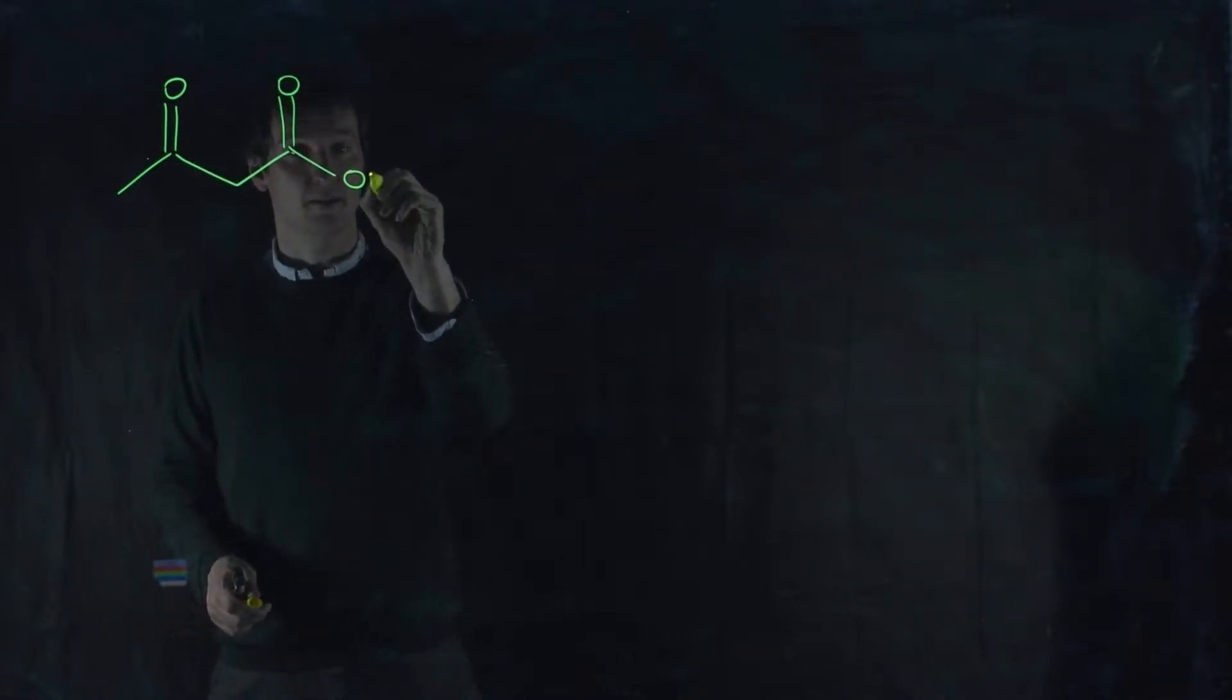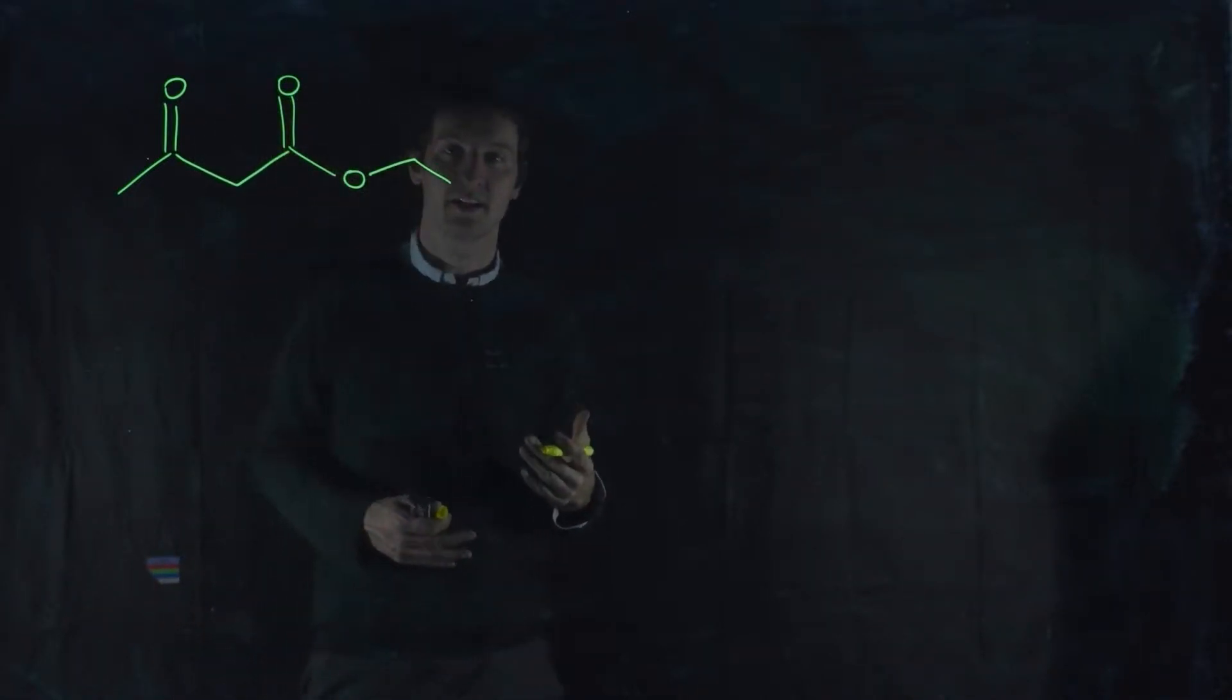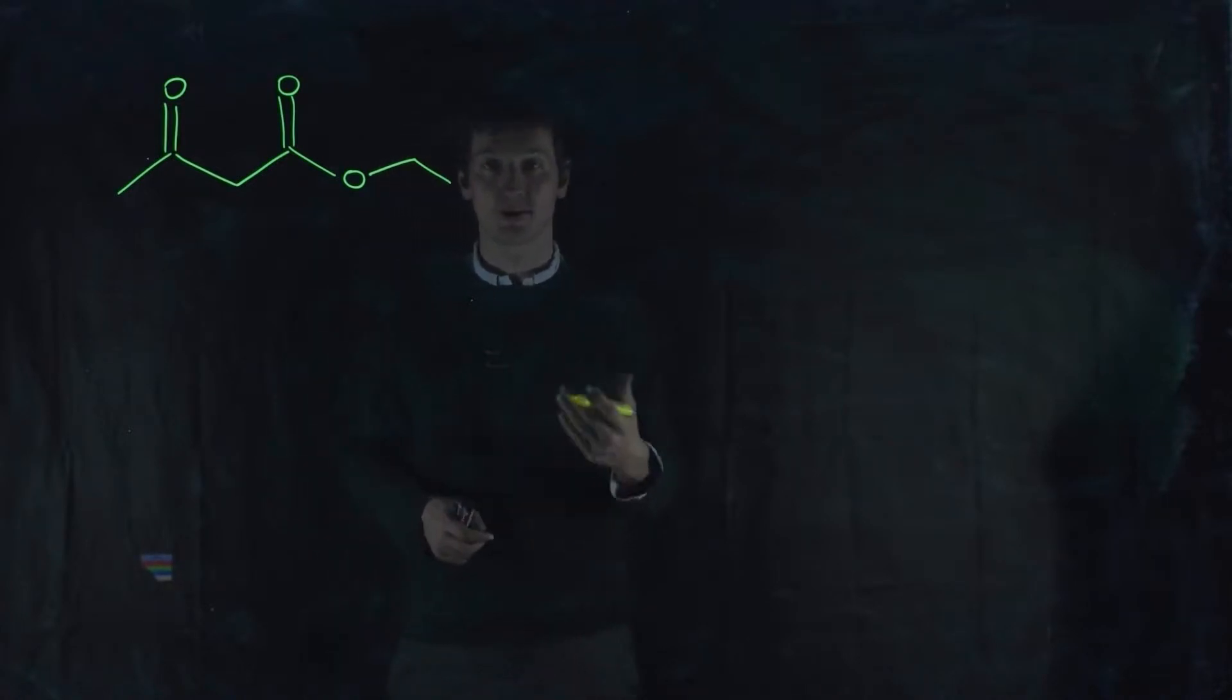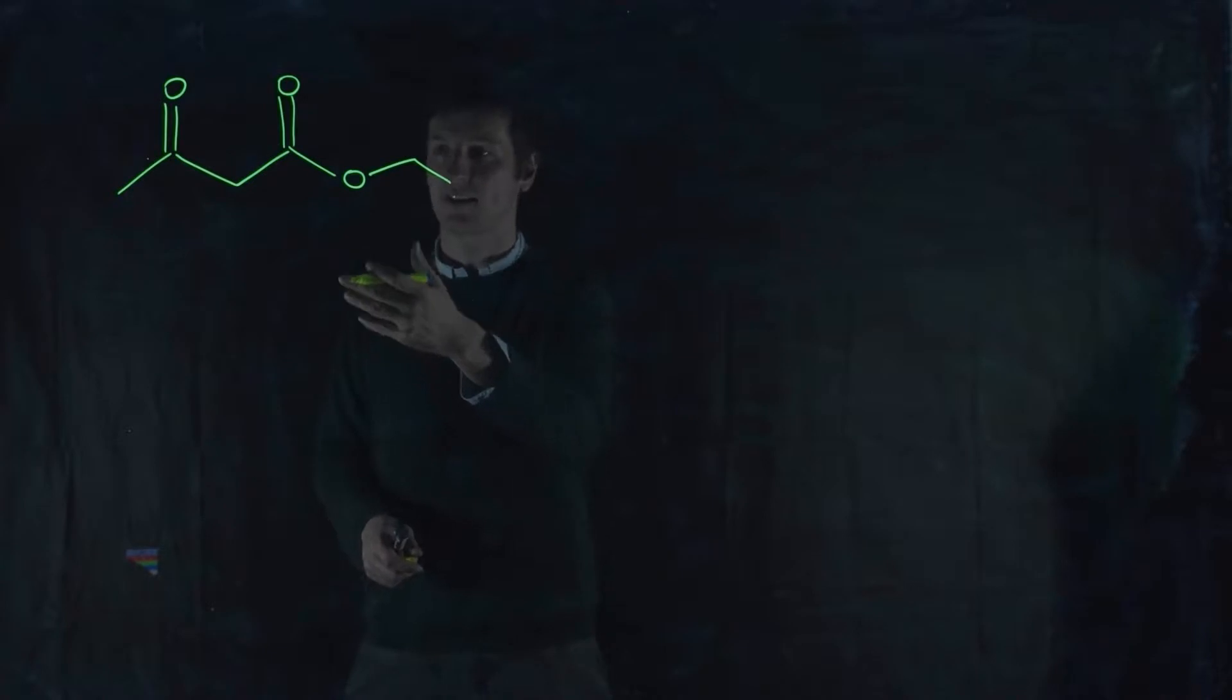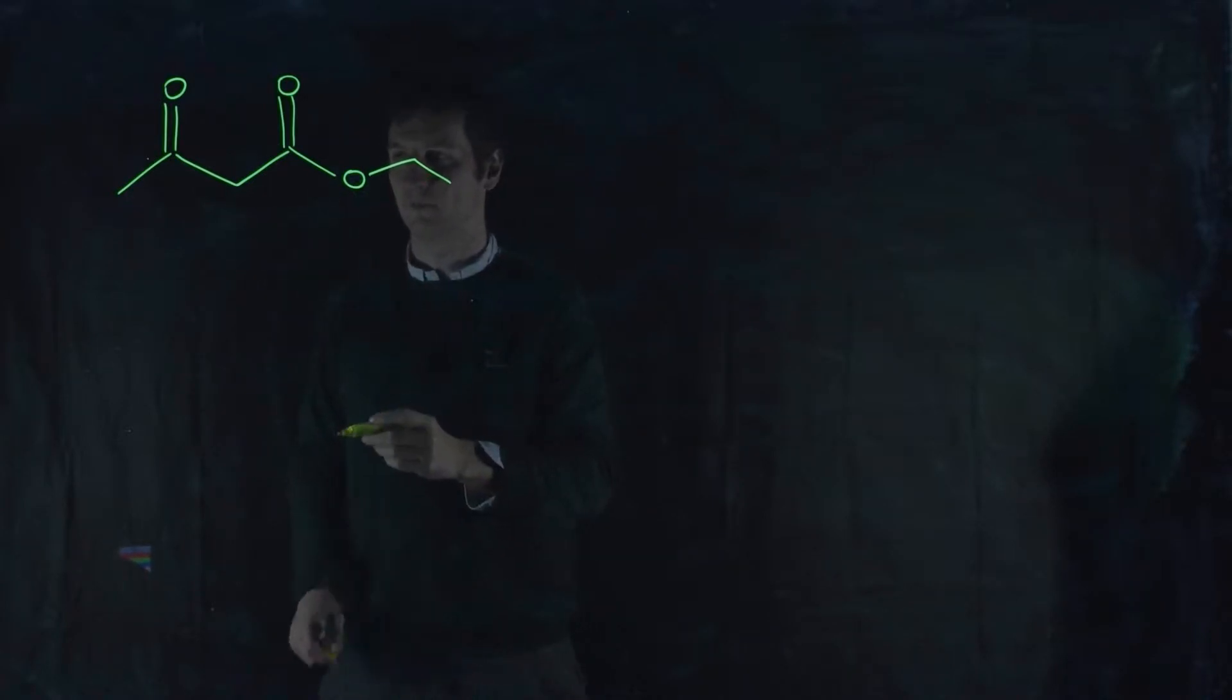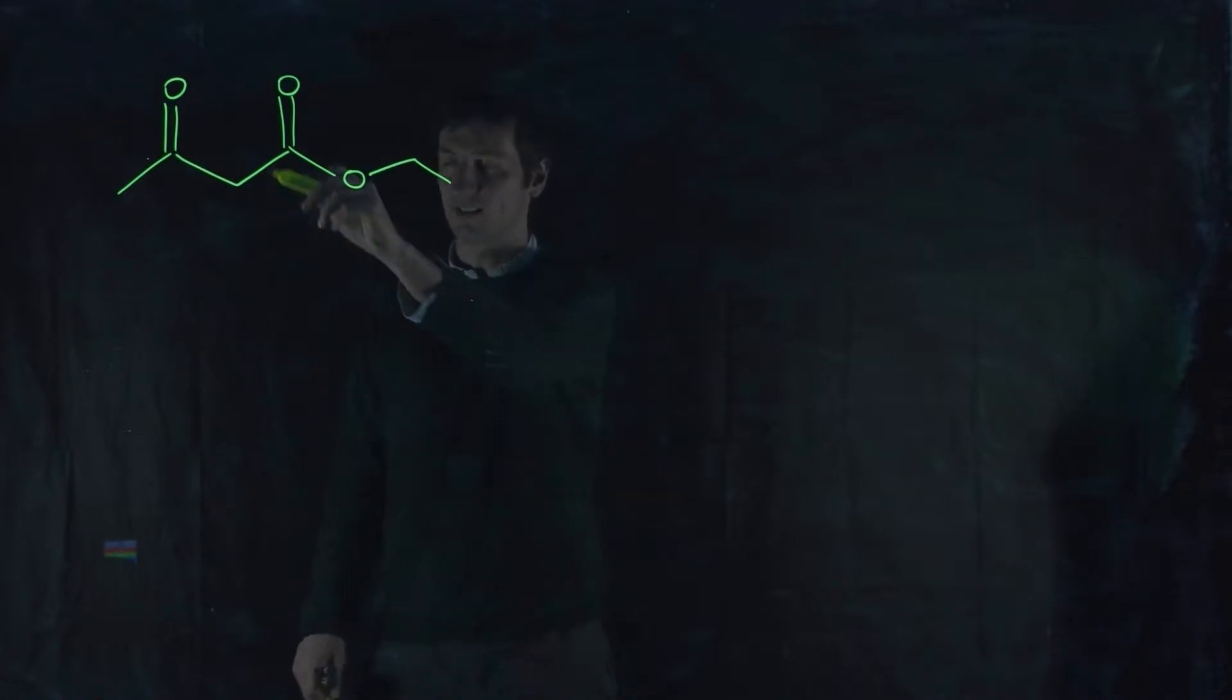And I'm going to pick a particular example that you're going to recognize from a reaction we've done before, which is the Claisen condensation. If you do the Claisen condensation with ethyl acetate, you end up with this molecule here, acetoacetate, or ethyl acetoacetate.